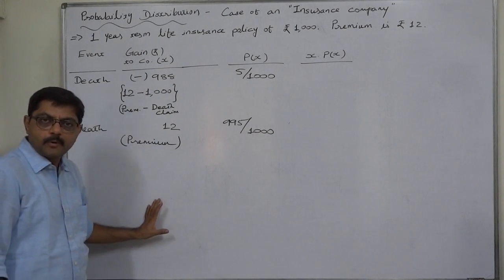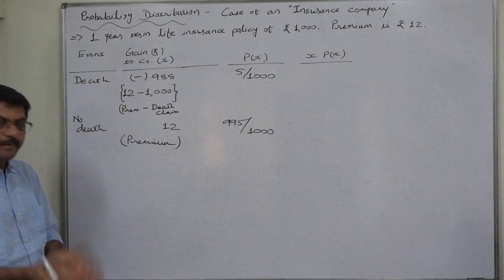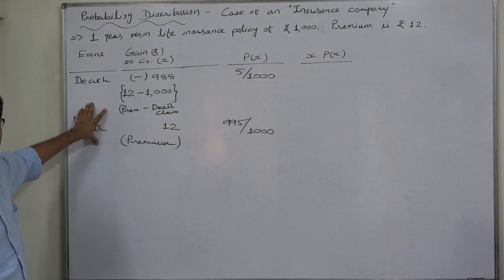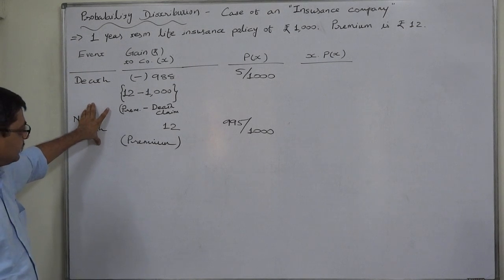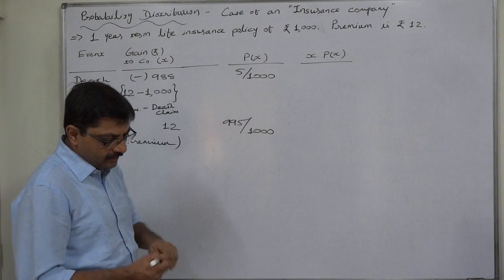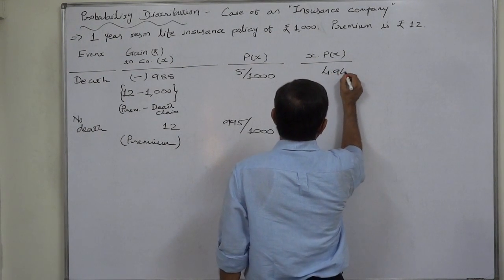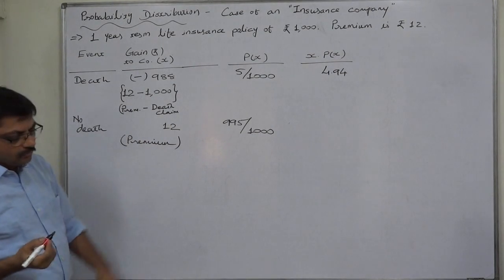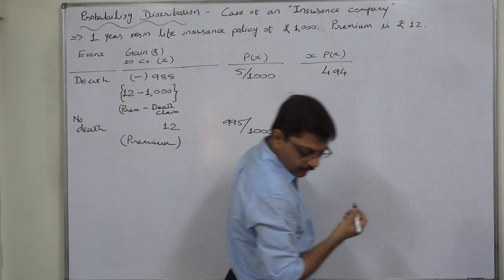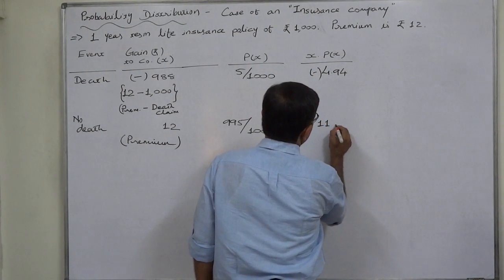Now we have the probability distribution of gain, which we prepared on the basis of the information about death and no death. Minus 988 into 5 by 1000, it comes to rupees 4.94. And 12 into 995 by 1000 comes to 11.94. This is negative amount, this is positive amount. 11.94.